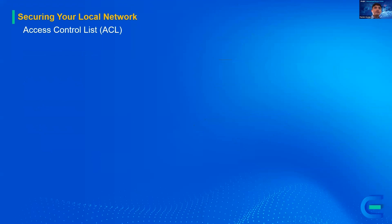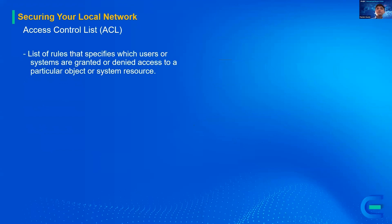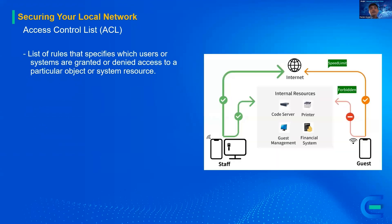What is this Access Control List? It's a list of rules that specifies which users or systems are granted or denied access to a particular object or system resource. For example, earlier Calvin showed you that guests cannot access the internal resources but can access the internet. That is what we want on our network — guests must have no access to the internal resources. We can do that using the Access Control List.